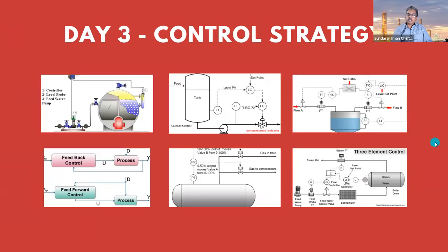On day three, we are going to talk about different control strategies. The closed loop can be divided into multiple types of controls based on what you want to achieve. For example, even in your house you have seen simple controls like on-off control in your water heater — when a preset temperature is reached, the thermostat either activates or shuts off. This is known as on-off control.